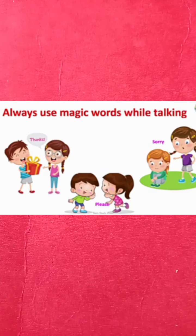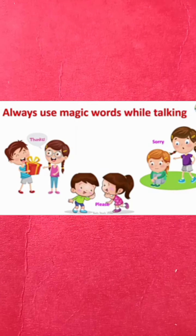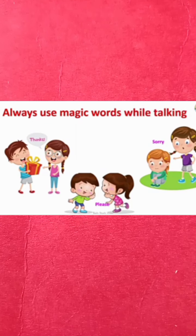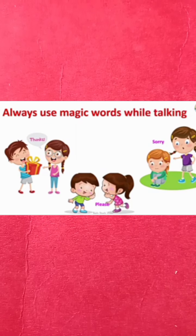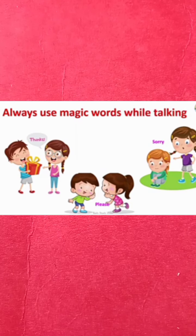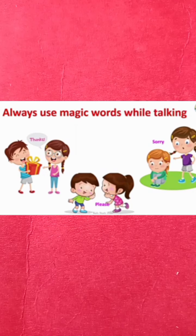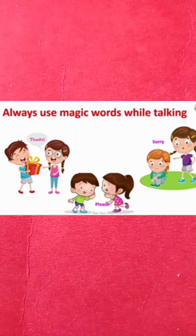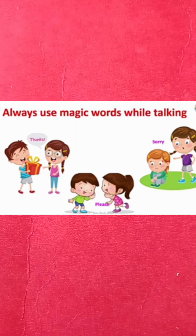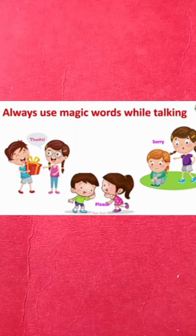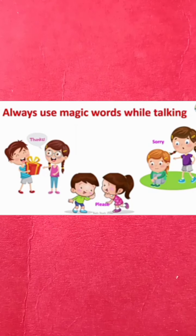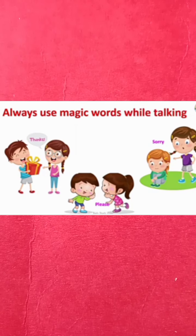Never tell a lie. Don't hide anything from your parents. Respect your parents and elders. We should always wish them good morning, good afternoon, good evening, and good night. Always use magic words while talking. These magic words can bring a lot of happiness around us.